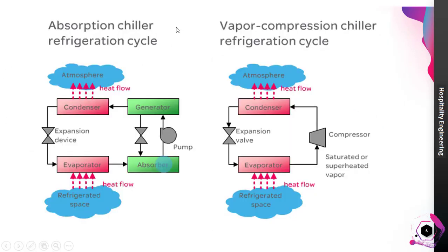Comparing the absorption chiller refrigeration cycle with the vapor compressive chiller refrigeration cycle: in the absorption system, the generator, pump, and absorber — shown in the green area — replace the compressor used in the vapor compression system. The compressor is replaced by the generator, pump, and absorber in the vapor absorption system. All remaining components of both systems are similar.